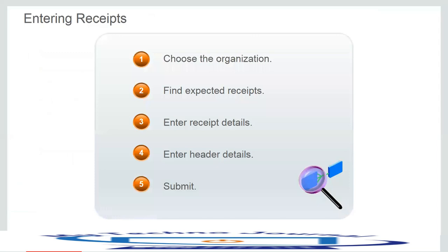For entering expected receipts, the first step is choosing the organization. Once you choose the organization, you can search by providing more information like a specific purchase order, or just click Search to find expected receipts. Then provide input for receipt details such as quantity, unit of measure, location, and sub-inventory. Next, specify the receipt header — whether to create a new receipt header or add lines to an existing receipt — and finally submit the receipt to complete the process.